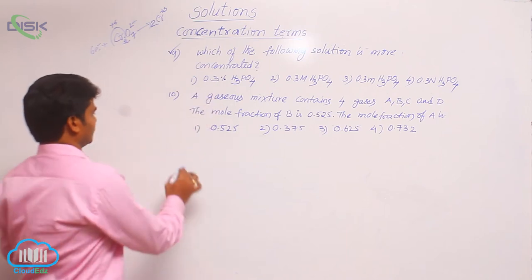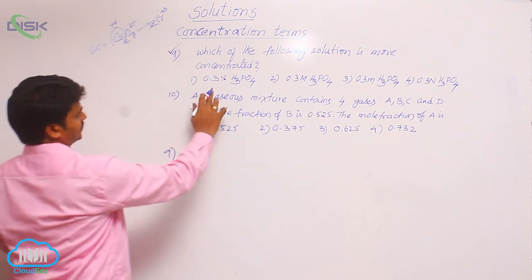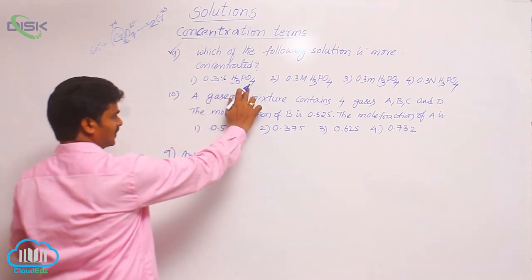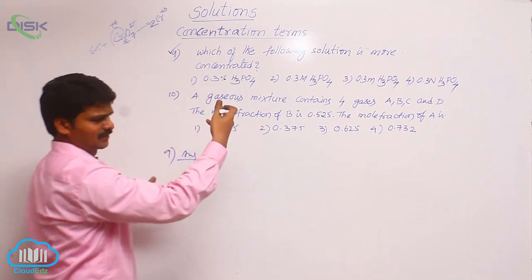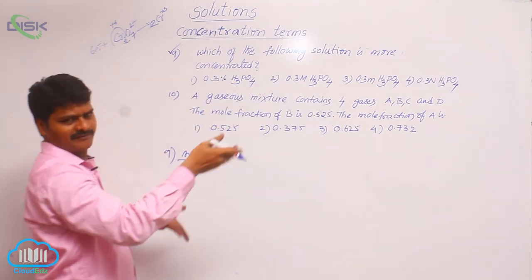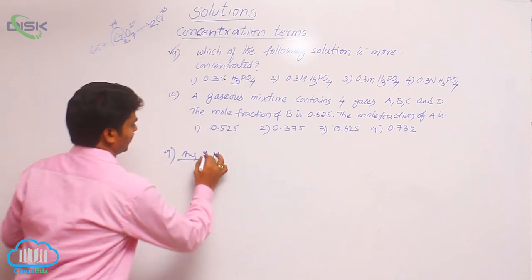So for that, see the answer for question number 9. Here percentage H3PO4 is given. Let us consider this one as weight by volume. Of course it may be weight by weight also. If we consider that, what is the formula for molarity?